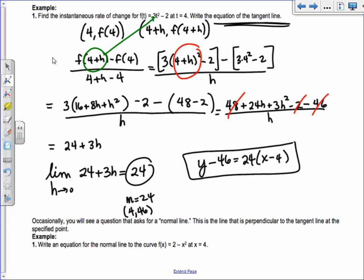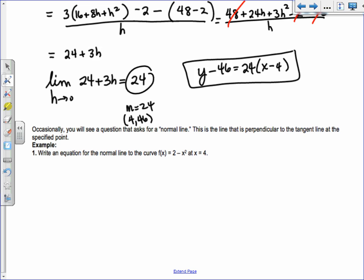Occasionally you'll see a question that asks for a normal line. If you have a normal line, all it is is perpendicular to the tangent line. So here's some kind of curve, with a tangent line, and the normal line is perpendicular going through like that.